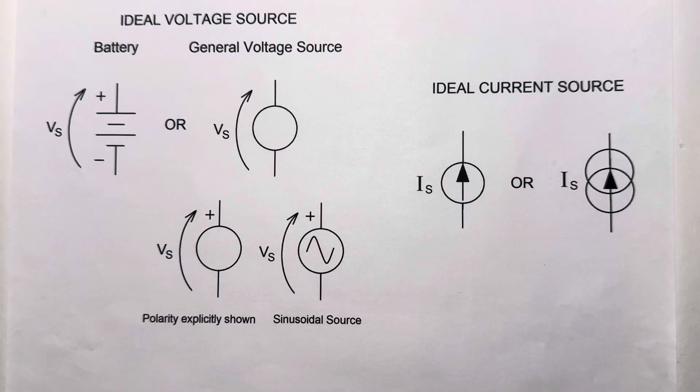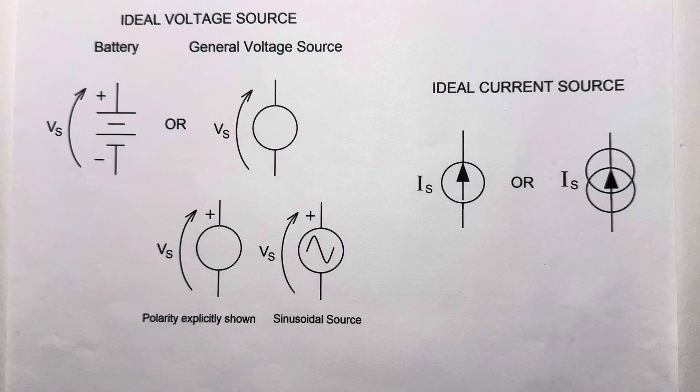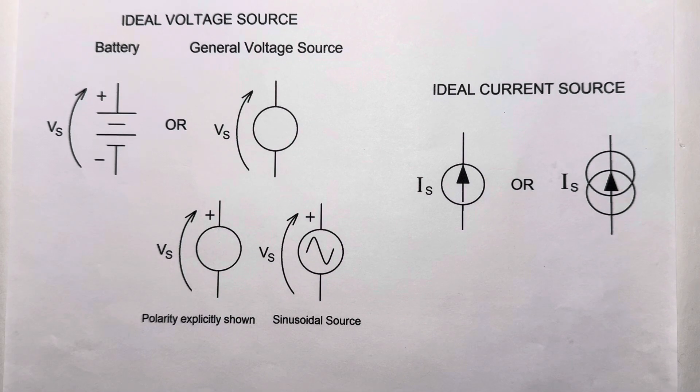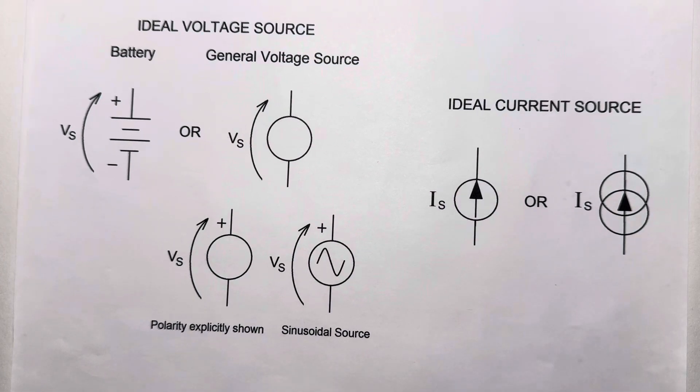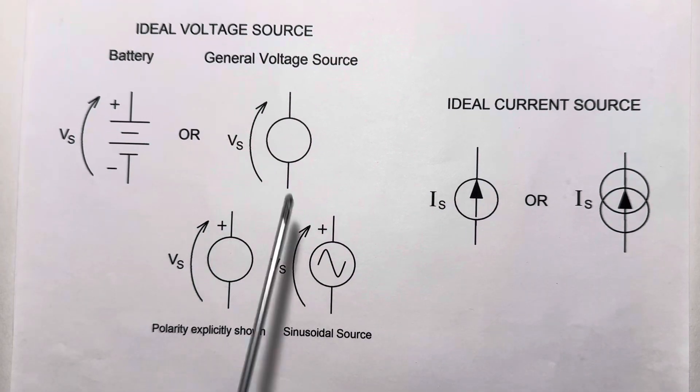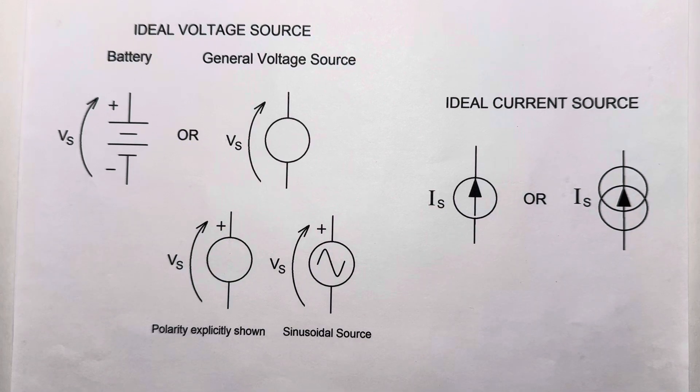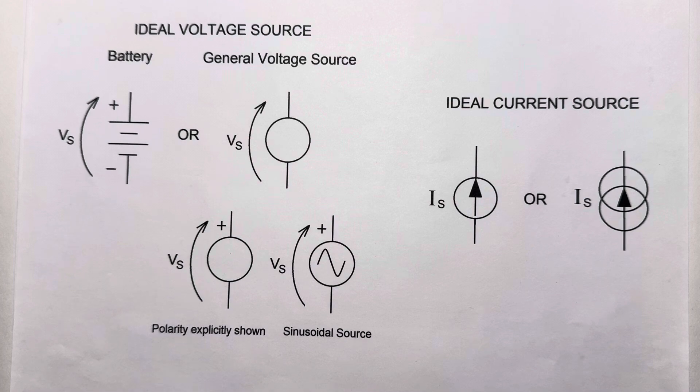Here we have the schematic symbols for voltage sources and current sources. Starting on the left, the symbol for a battery, which probably just about anybody watching this video is going to be familiar with. A more generalized symbol for a voltage source is just a circle with two terminals coming out. Sometimes the polarity will be explicitly shown. And sometimes if it's not a DC source, we will draw the waveform of the function inside of it. For example, we have a sinusoidal source here.